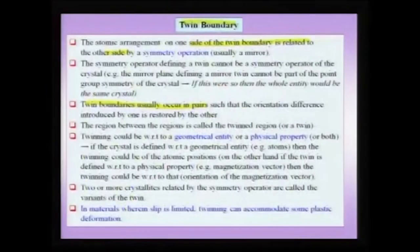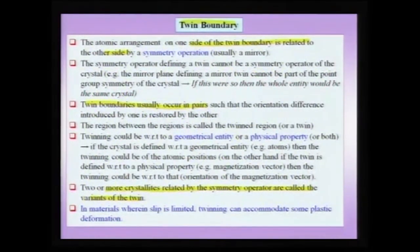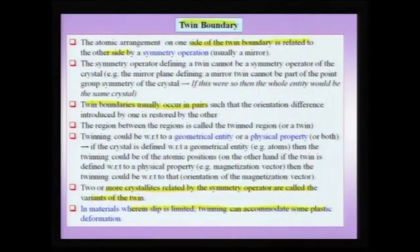Two or more crystallites related by the symmetry operator are called variants of the twin. The importance of twinning becomes very obvious especially when talking about plastic deformation. One of the most important vehicles of plastic deformation is the dislocation, but there are systems wherein plasticity by slip or by the motion of dislocations is limited — for instance, BCC crystals at low temperature. In such materials, twinning becomes an important mechanism by which plastic deformation is achieved. Therefore, twinning is not only an important structural defect from the point of view of symmetry, but it can play a very important role in plastic deformation, especially in systems wherein slip is limited or where strain rates are very high.